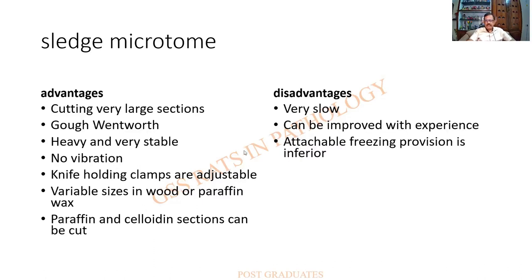Disadvantages: the sledge microtome is very slow, though speed improves with experience. A freezing provision can also be attached to it, so it may be used as a freezing microtome, though this is not recommendable.